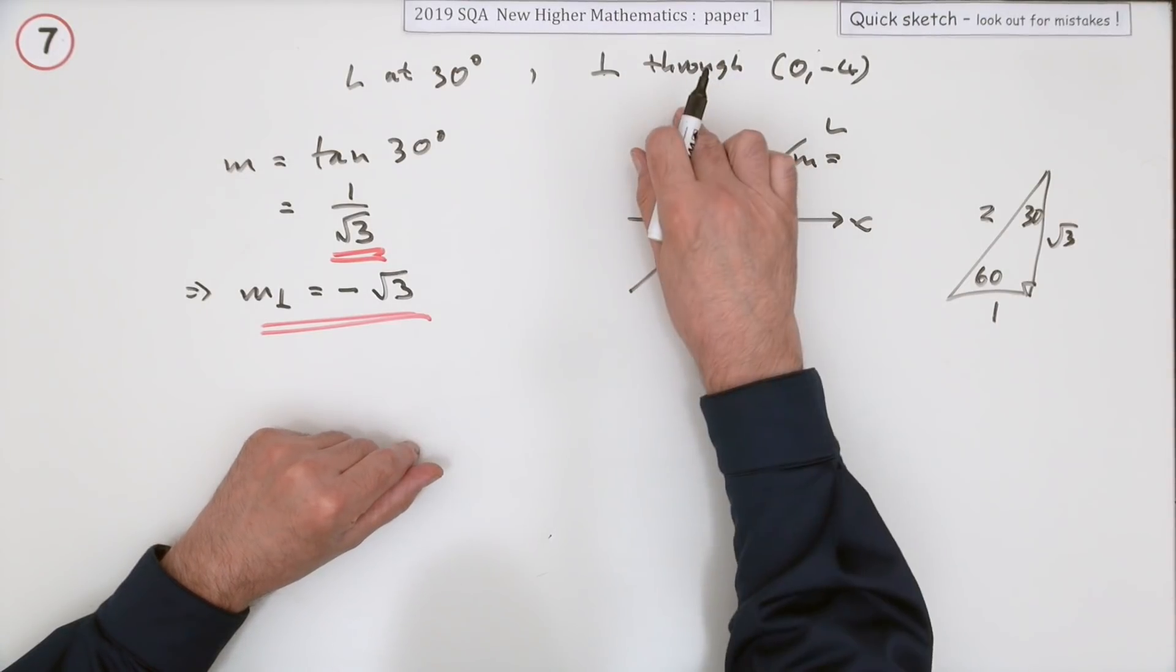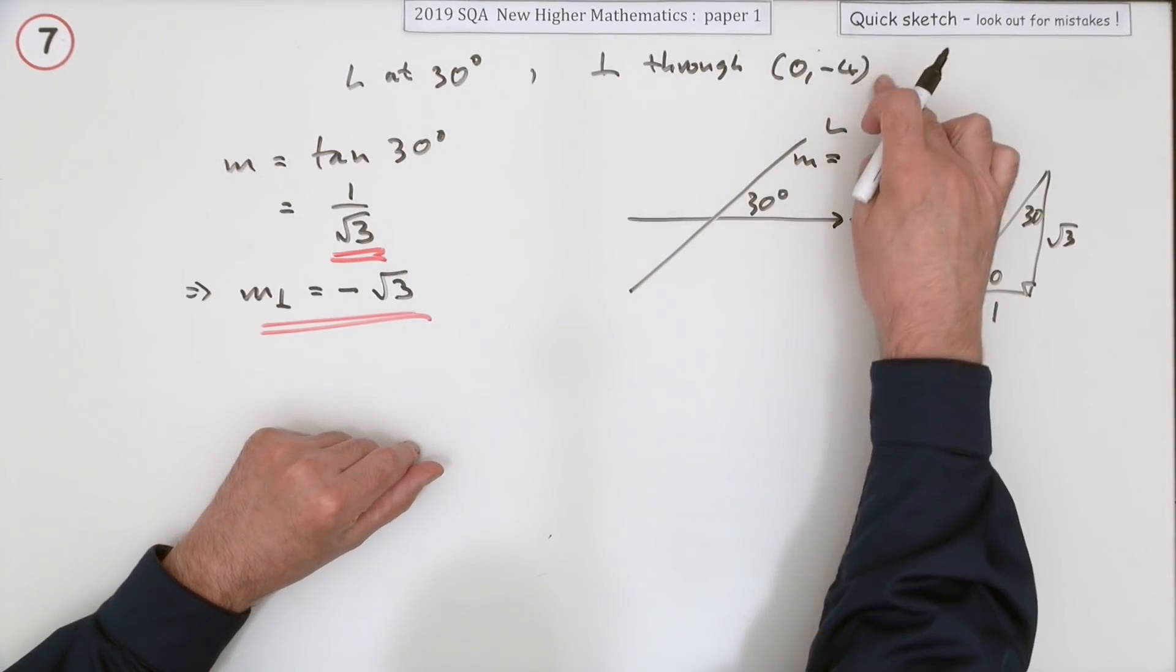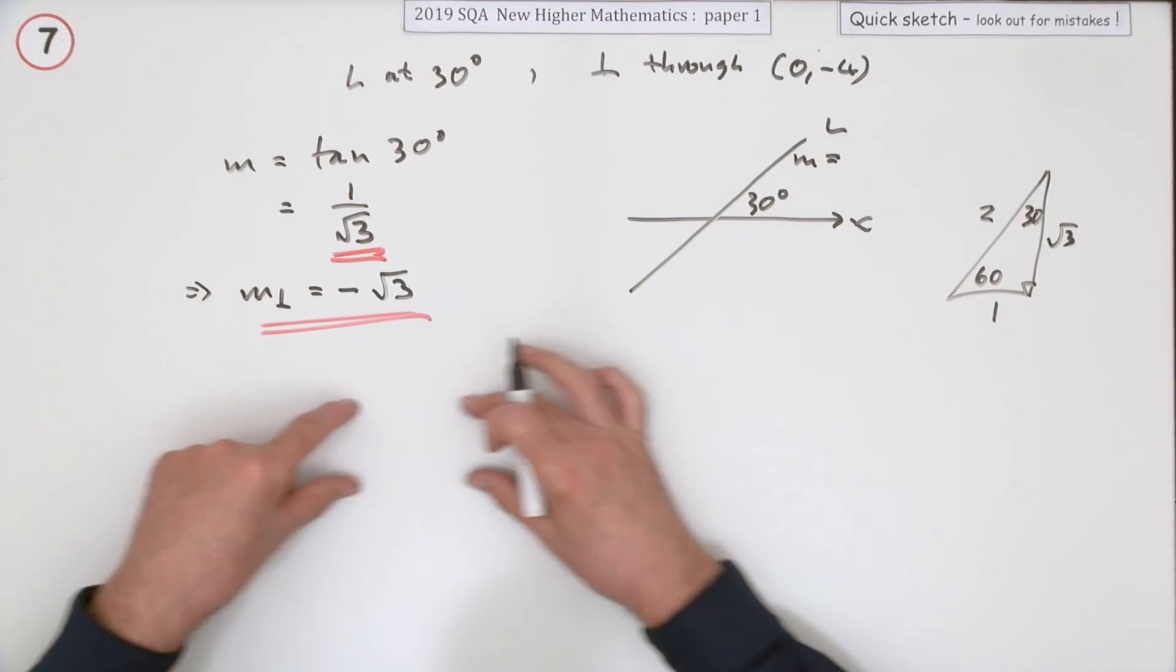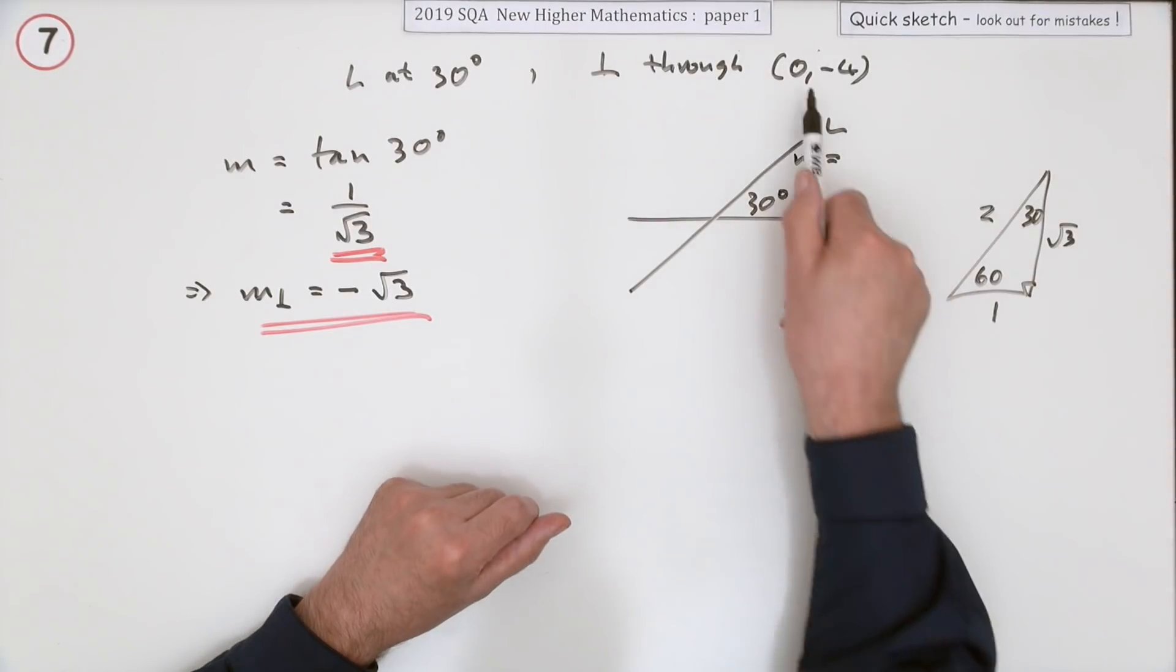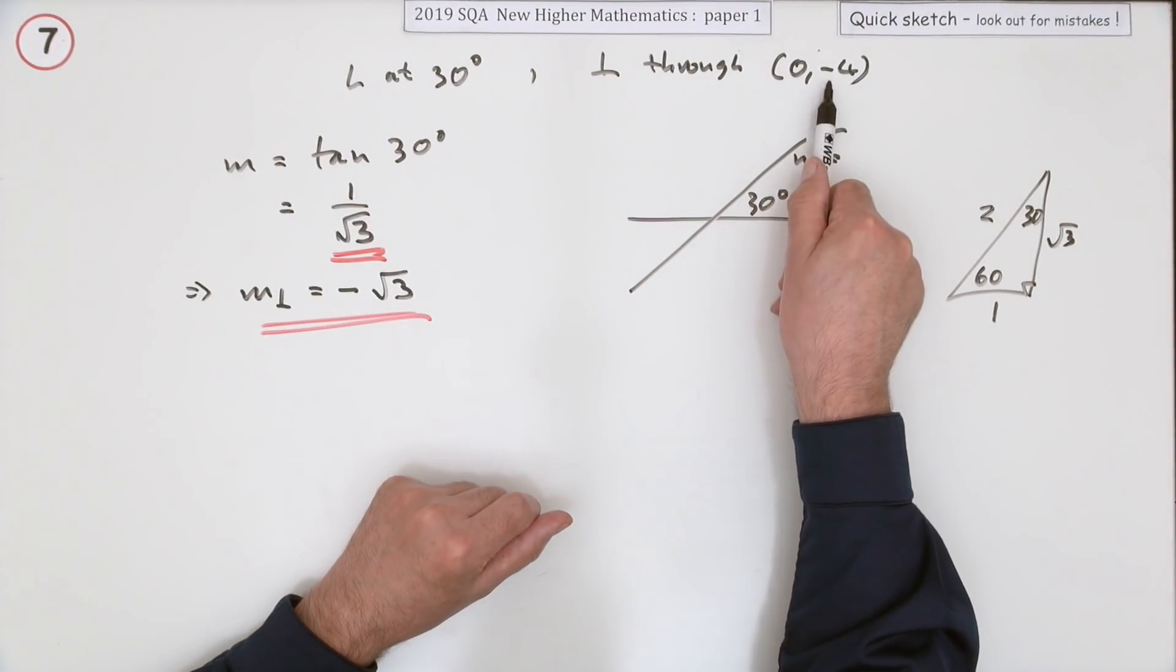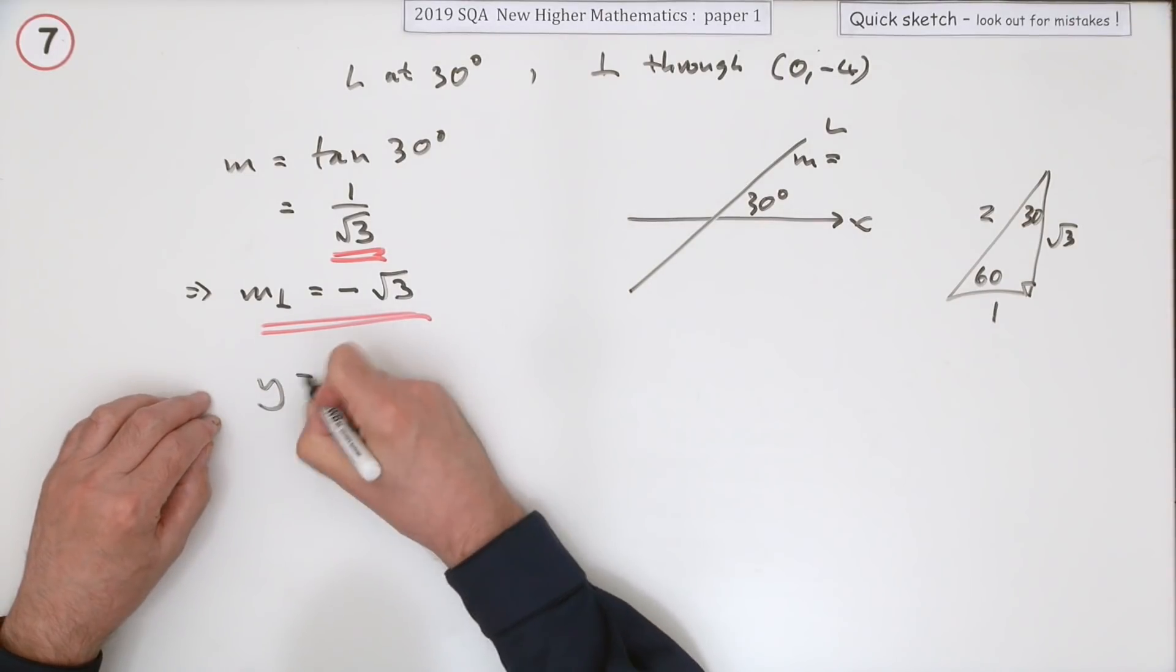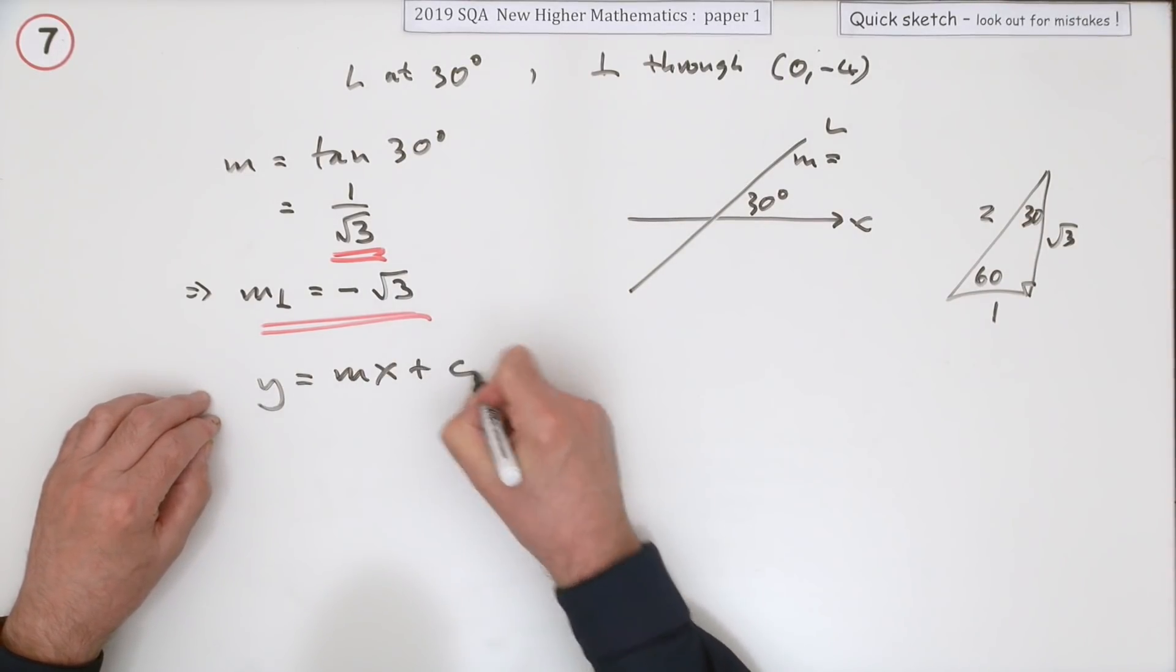There's still two marks left. What's the equation of the line with this gradient then, that's through the point (0, -4)? Well, you could go in with y minus b equals m times x minus a. If you didn't realise that the point (0, -4) is on the y-axis, so you can just go in with y equals mx plus c.